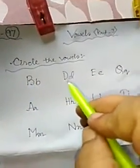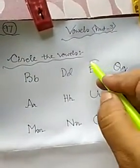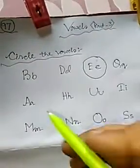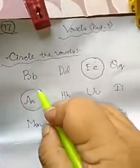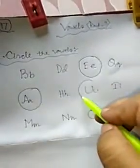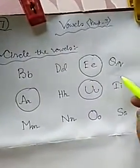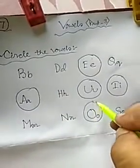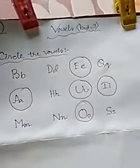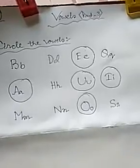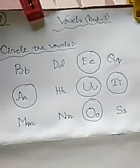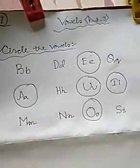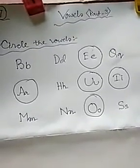B is not a vowel, E is a vowel so circle it, A is a vowel, U, I, O — as I said earlier, A, E, I, O, U are the five vowels. I have circled all the vowels here.